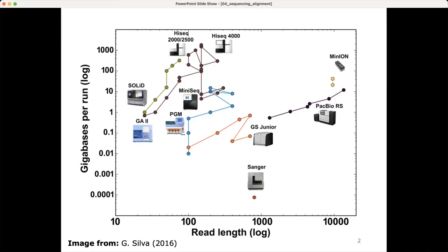Sanger sequencing is a very important one with relatively high read length, so it's on the right side of the graph, but with very low throughput. The brown dots are all the Illumina sequencers showing their evolution through time. Nowadays you have different Illumina platforms ranging from relatively low to very high throughput. ABI sequencing — the big green dot — has been discontinued because it was too costly with no big difference in quality compared to Illumina. Ion-torrent sequencing, in blue, can produce a bit longer reads compared to Illumina but also has its own challenges.